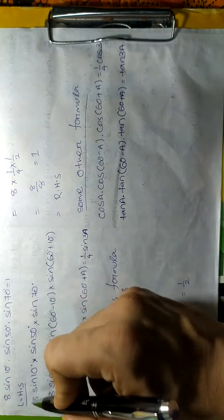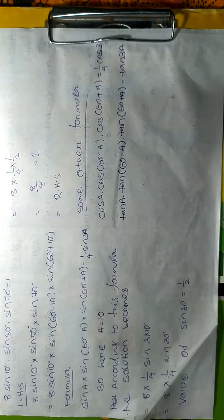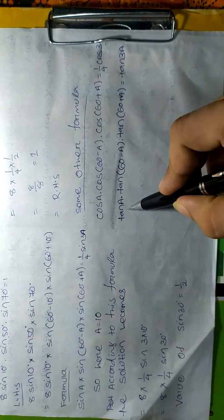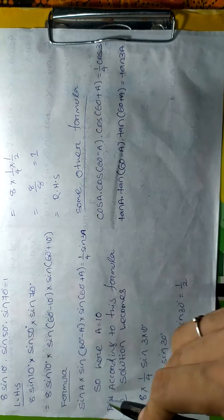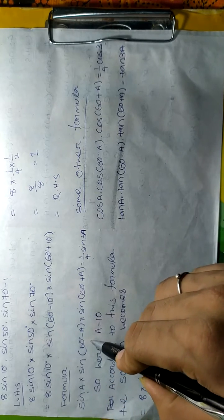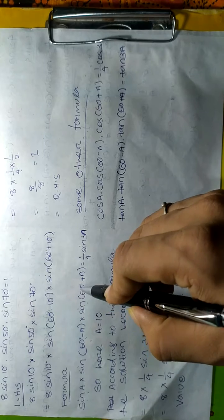There are three types of formulas: one is for sine, one is for cosine, and one is for tangent. Since we have sine, we use the sine formula: sin(a) · sin(60° - a) · sin(60° + a) = (1/4)sin(3a). This is the important part. Now we have to convert 50° to the 60° minus a formula.